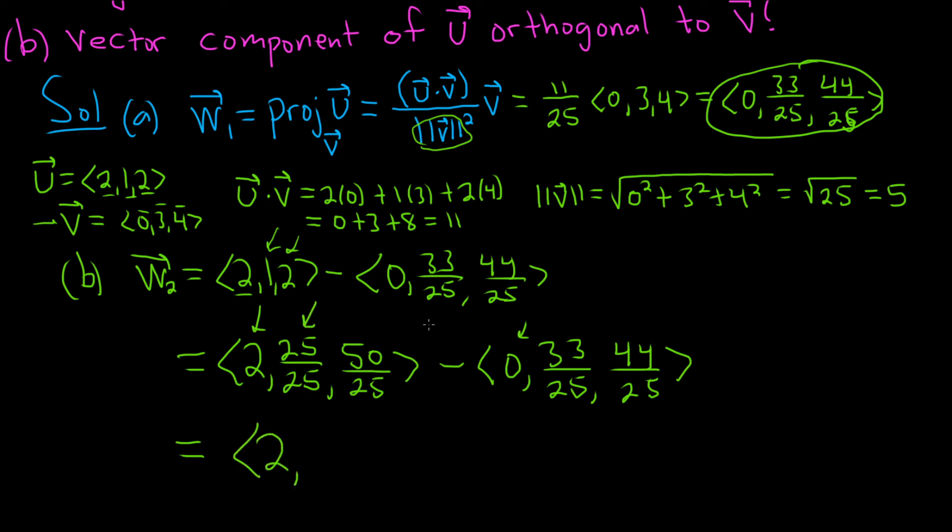25 over 25 minus 33 over 25. You subtract 25 minus 33 to get negative 8 over 25. Then 50 over 25 minus 44 over 25. You subtract 50 minus 44 to get 6 over 25. And that's it.